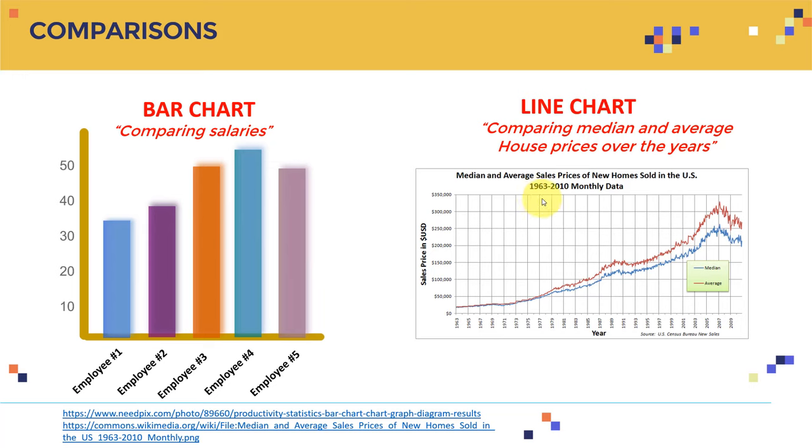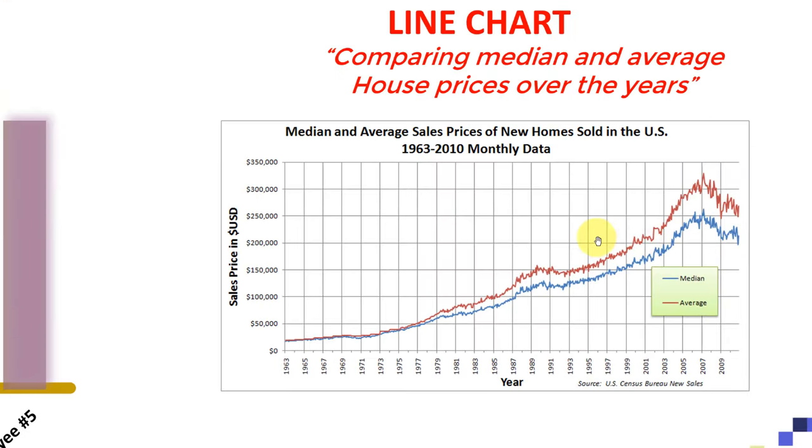However, here on the right hand side, I can plot line chart. I can compare median and average house prices over the years, for example. As you can see here, this is the median value. These are sales price in US dollars, here we have the years. And by using the line chart, I can simply show the variations of the house prices over the years.